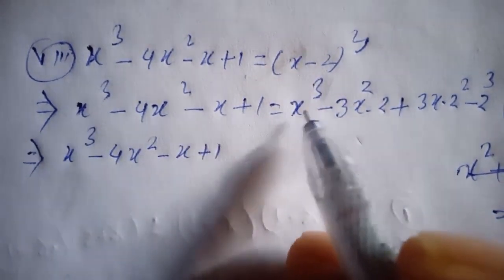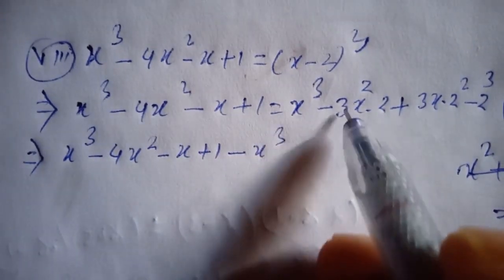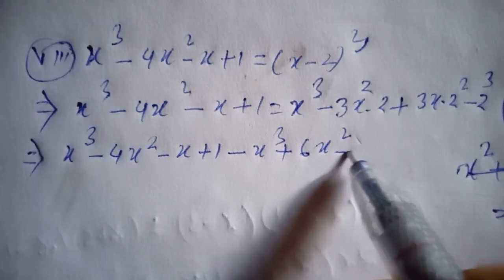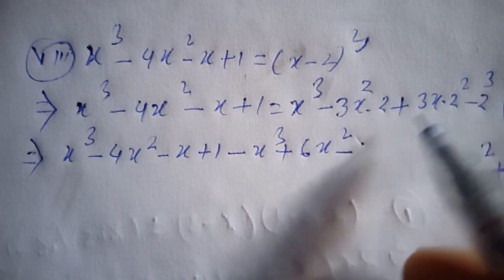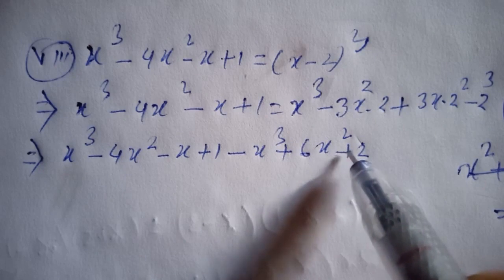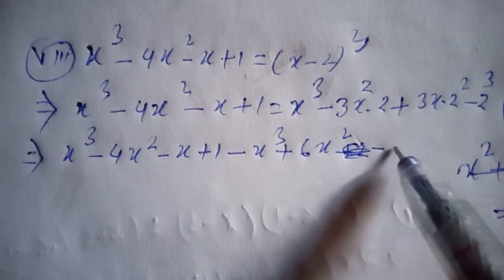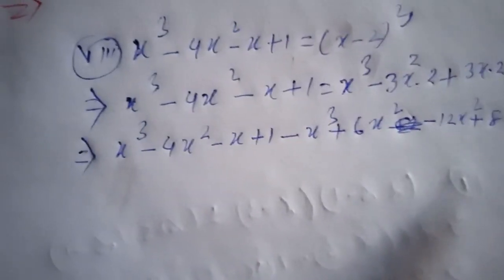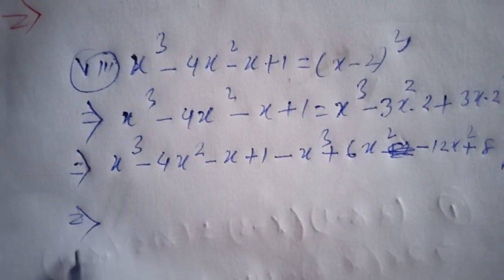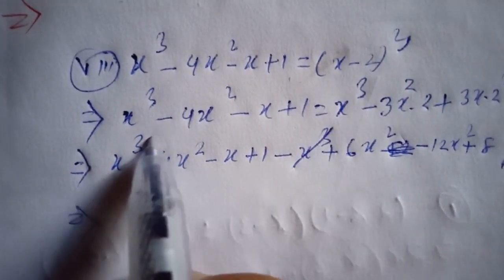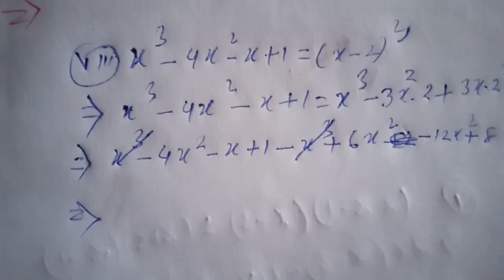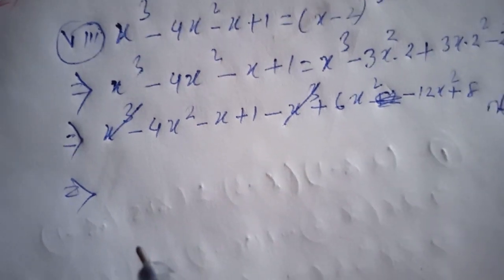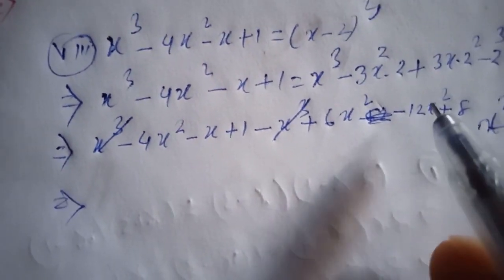We expand to get x cubed minus 12x squared plus... After combining like terms with minus 4x squared, we get terms involving x cubed, x squared coefficients of minus 4 and minus 12.